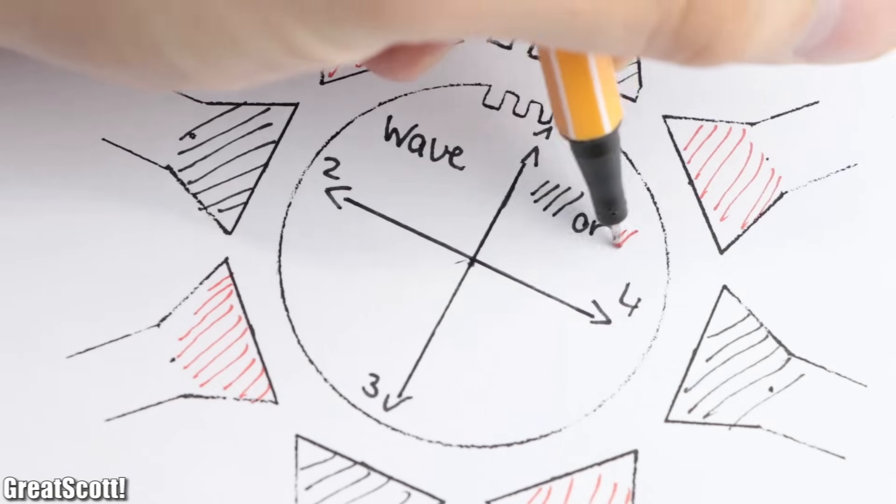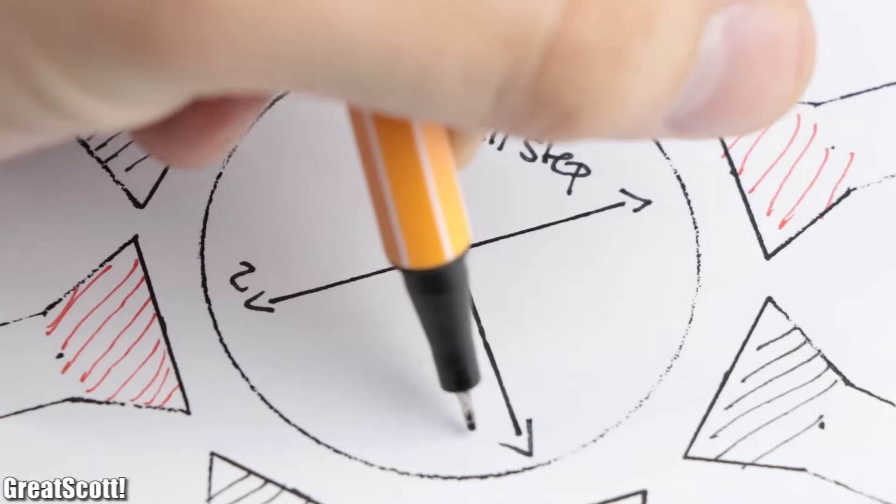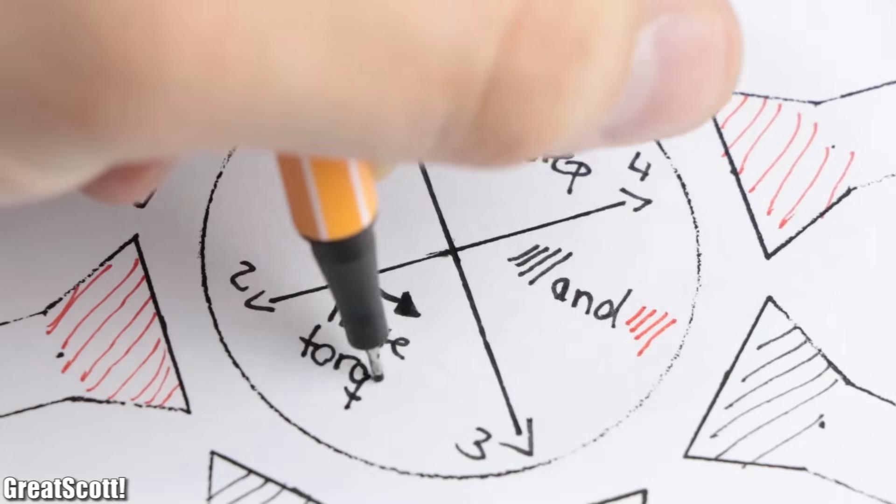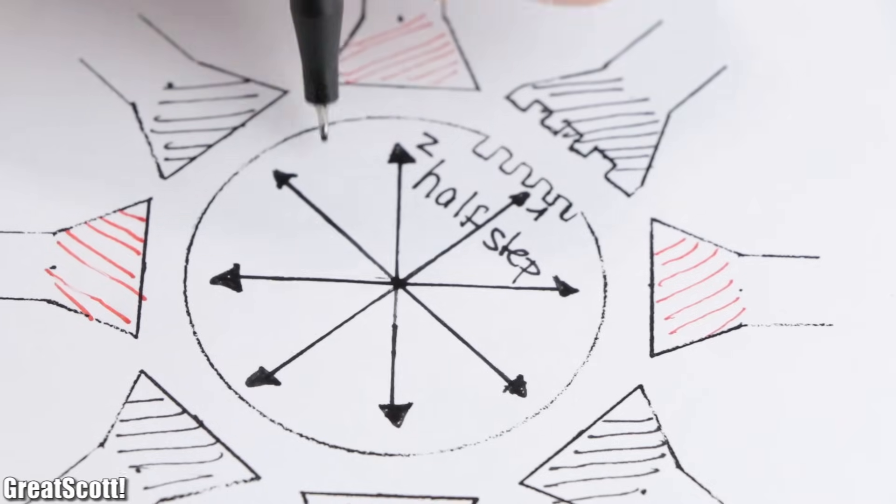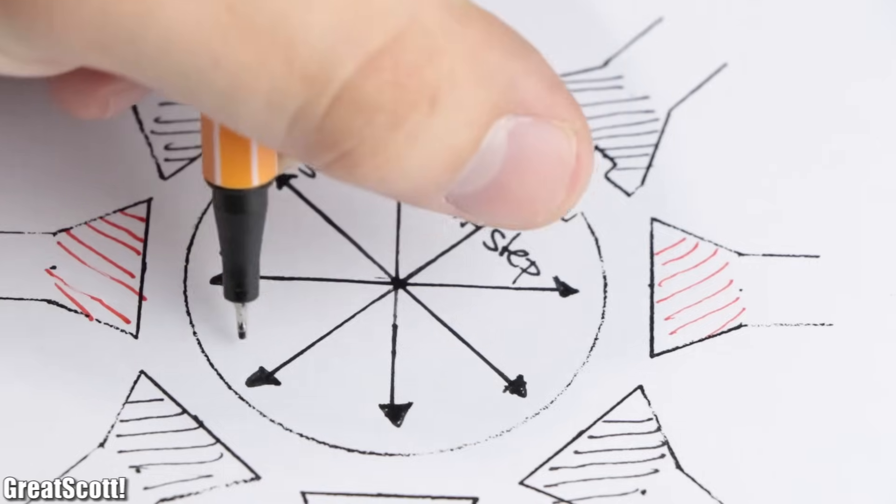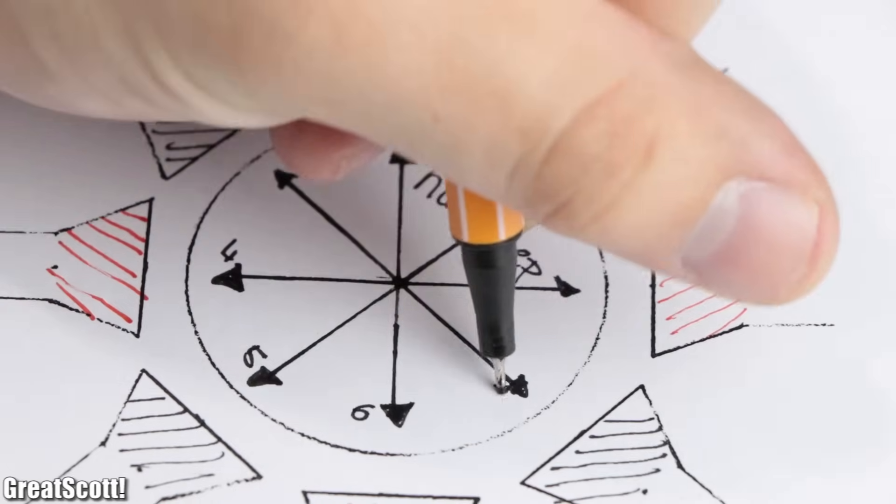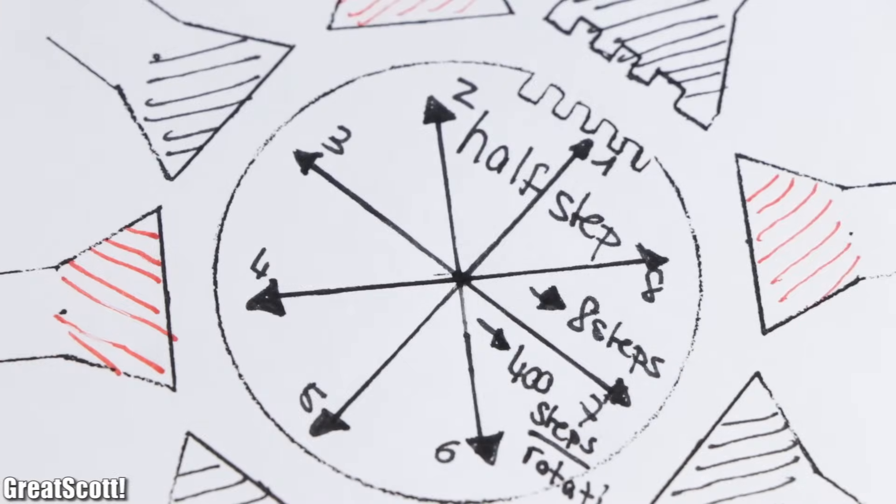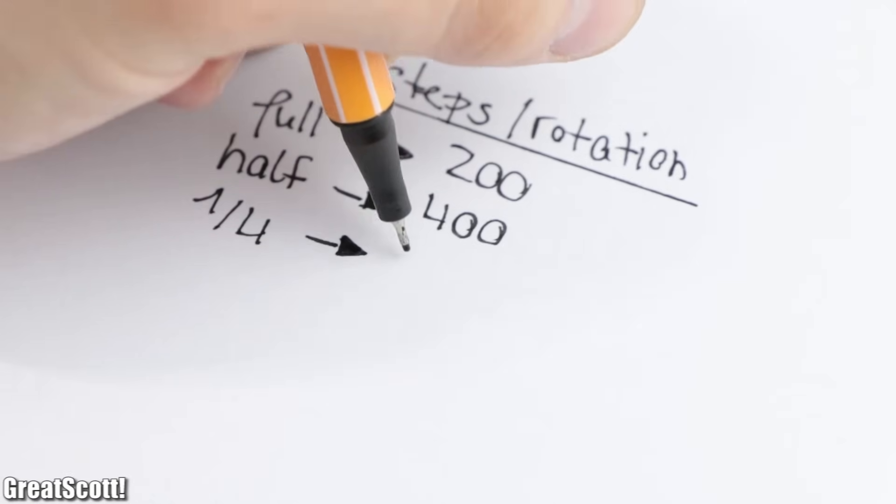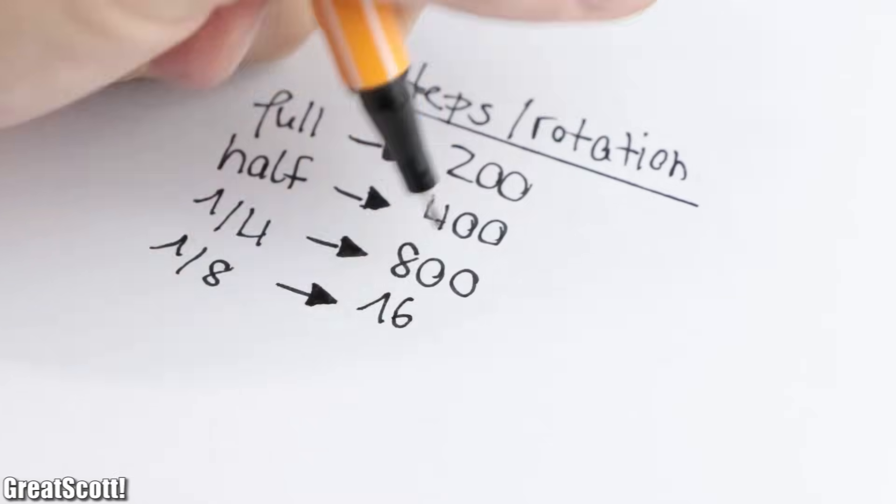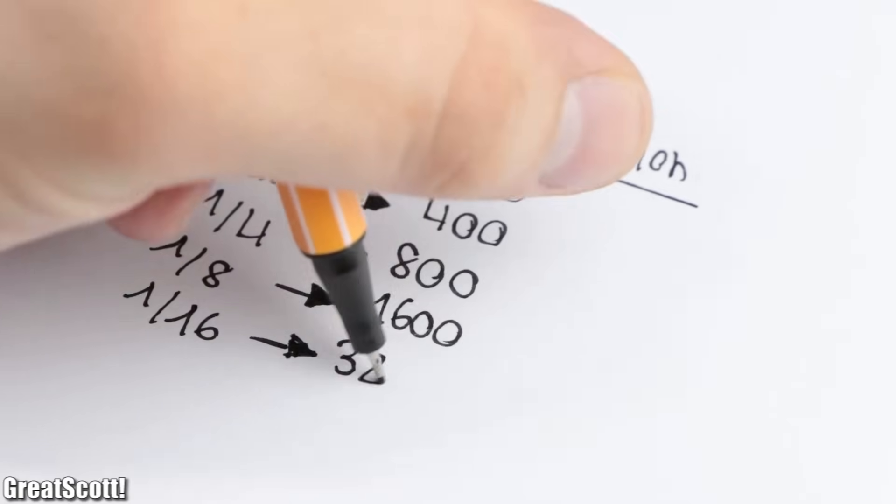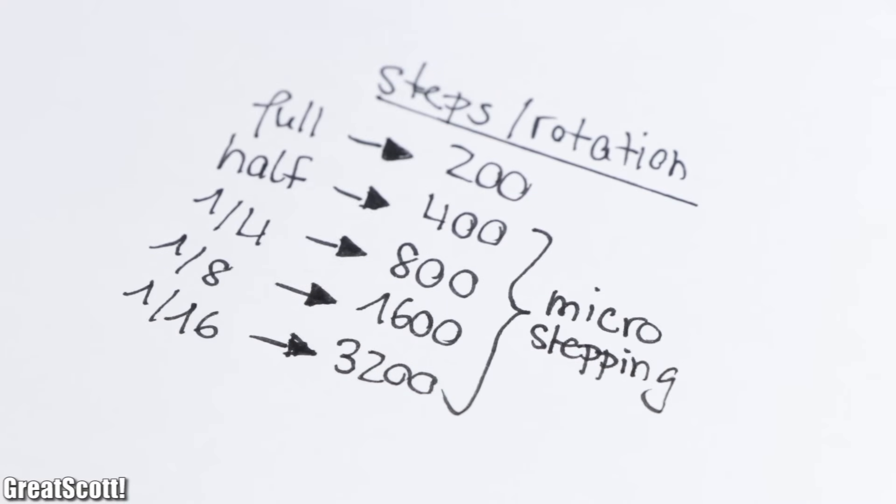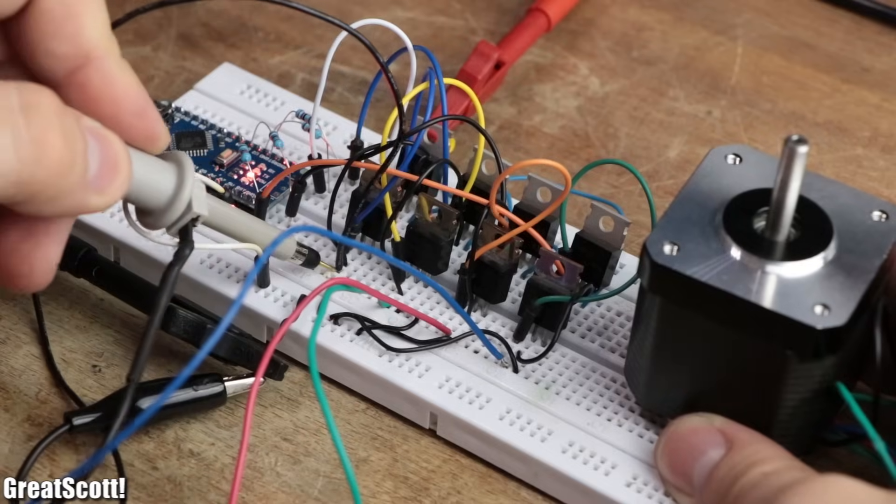There also exists full step driving in which both coils are active and thus create a higher torque. Next is half step driving which combines all the previous driving states and thus increases the resolution from 200 steps to 400 steps per rotation. This madness then continues to one quarter steps, one eighth steps, one sixteenth steps and so on, which is also known as micro stepping.